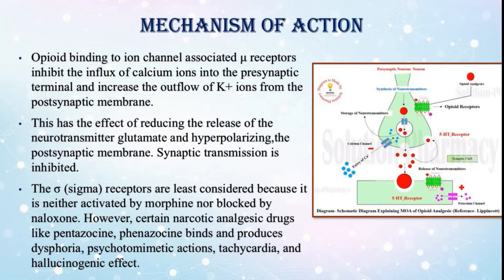Mechanism of action. Opioid binding to ion channel-associated mu receptors inhibits the influx of calcium ions into the presynaptic terminal and increases the outflow of K+ ions from the postsynaptic membrane. This reduces the release of the neurotransmitter glutamate and hyperpolarizes the postsynaptic membrane, thereby inhibiting synaptic transmission. The sigma receptors are least considered because they are neither activated by morphine nor blocked by naloxone. However, certain narcotic analgesic drugs like pentazocine and phenazocine bind and produce dysphoria, psychotomimetic actions, tachycardia, and hallucinogenic effects.